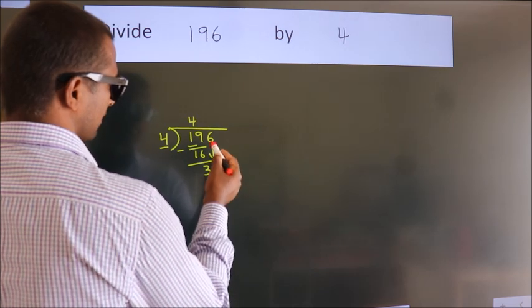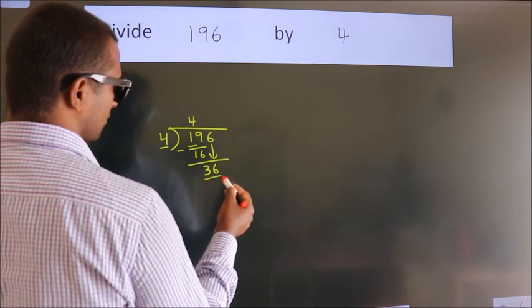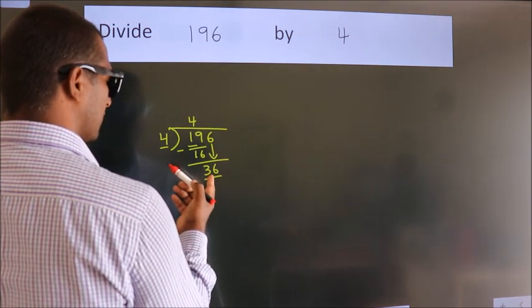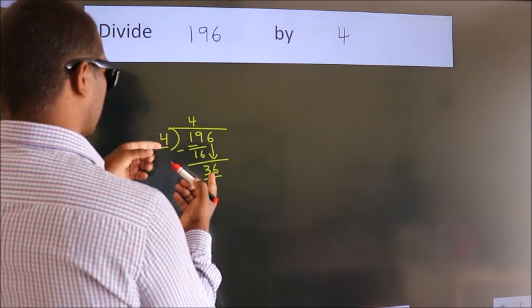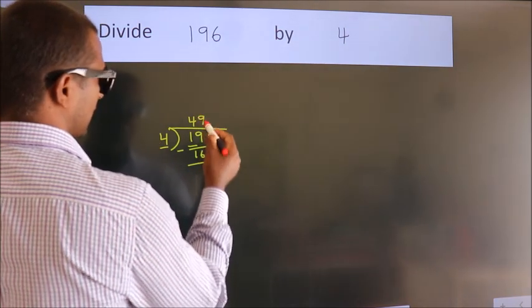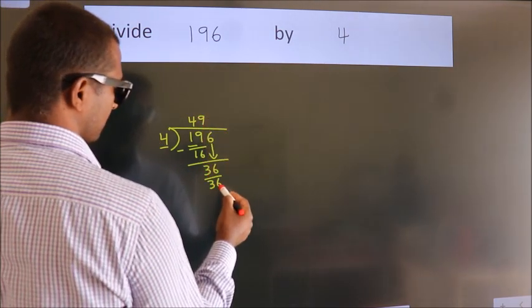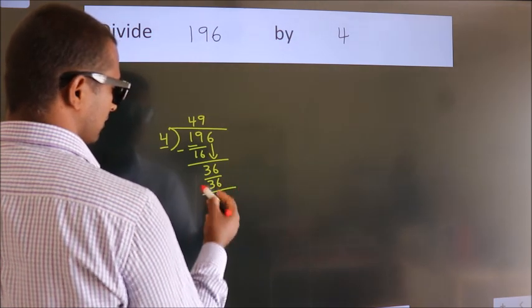After this, bring down the beside number, so 6 down. So 36. When do we get 36 in the 4 table? 4 times 9 equals 36. Now we subtract.